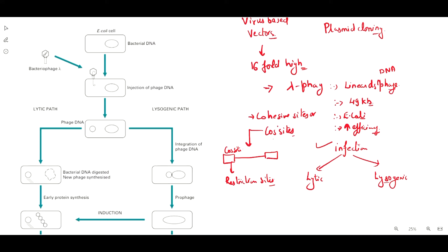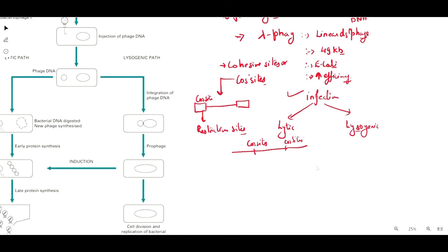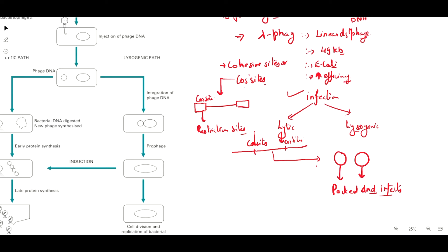The phage DNA gets multiplied by the rolling circle mechanism in the concatamer structure. Here in the middle you have cos sites. After production of these concatamers, the phage genome gets circularized by cleavage at these sites, and then after circularization, they get packed and released into the environment and infect other host cells.